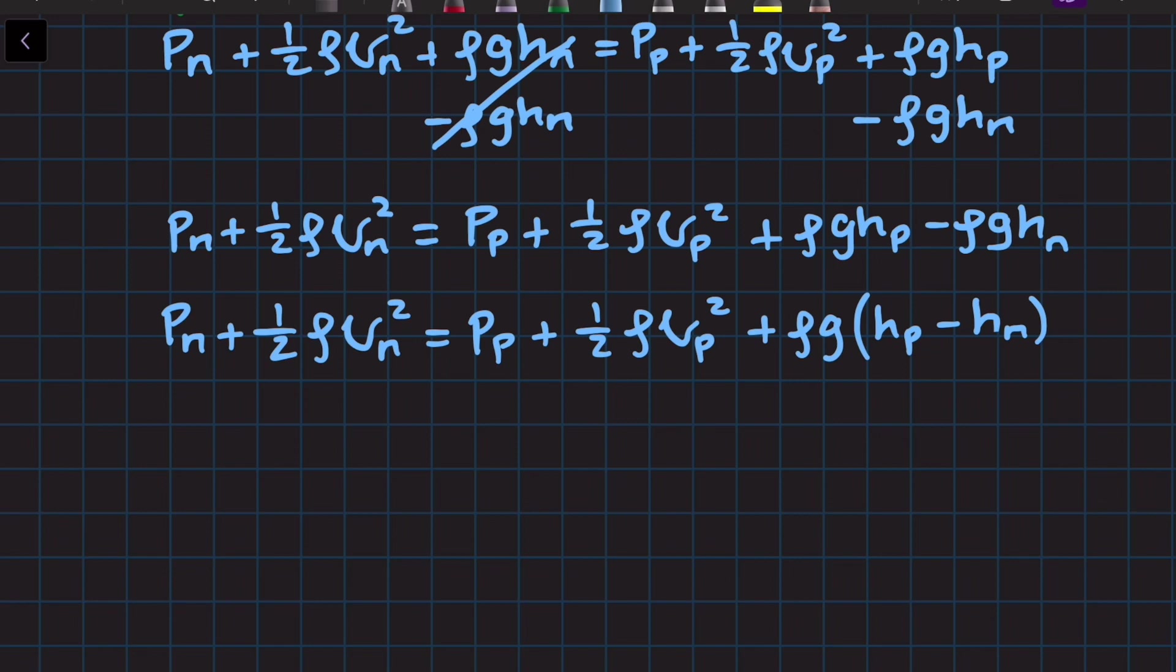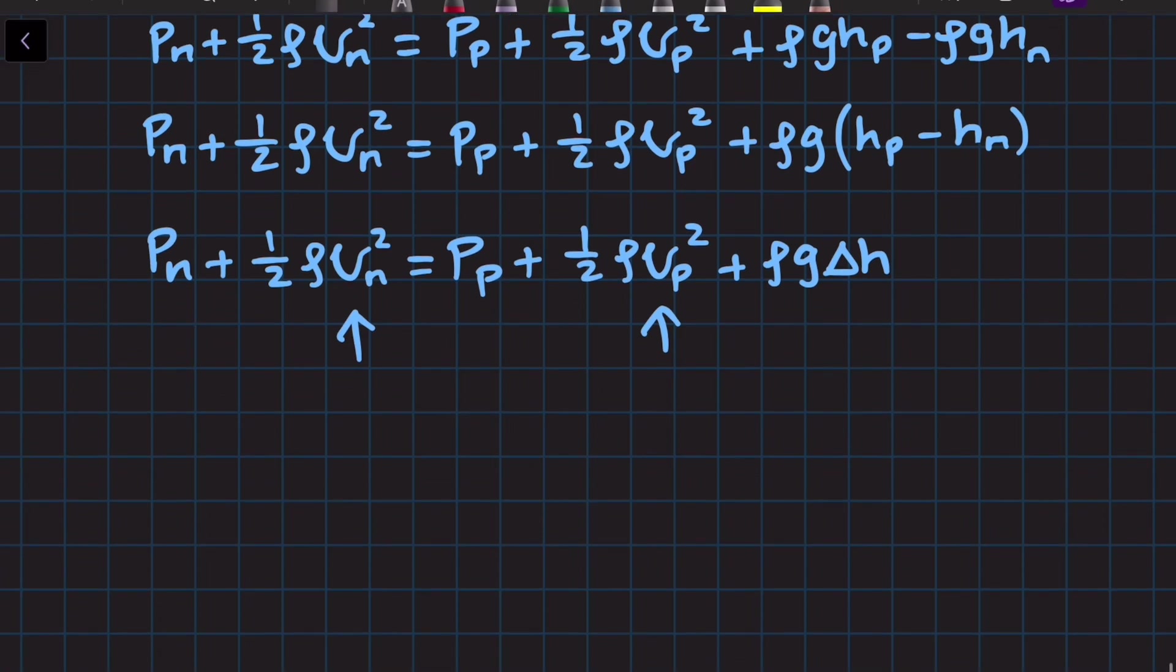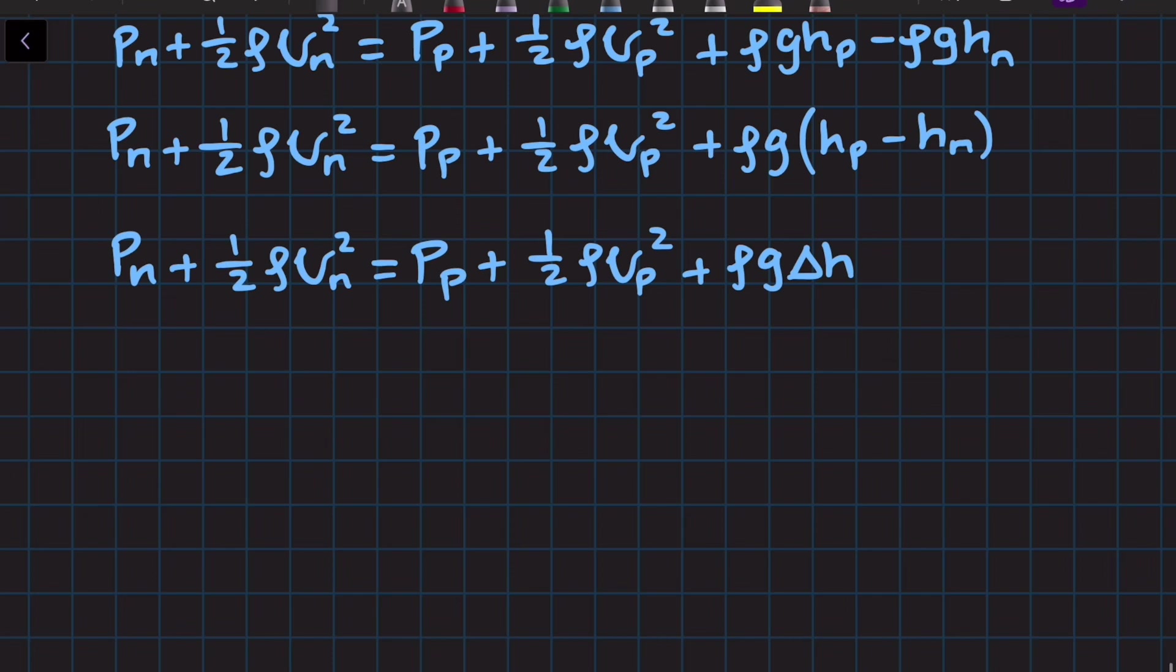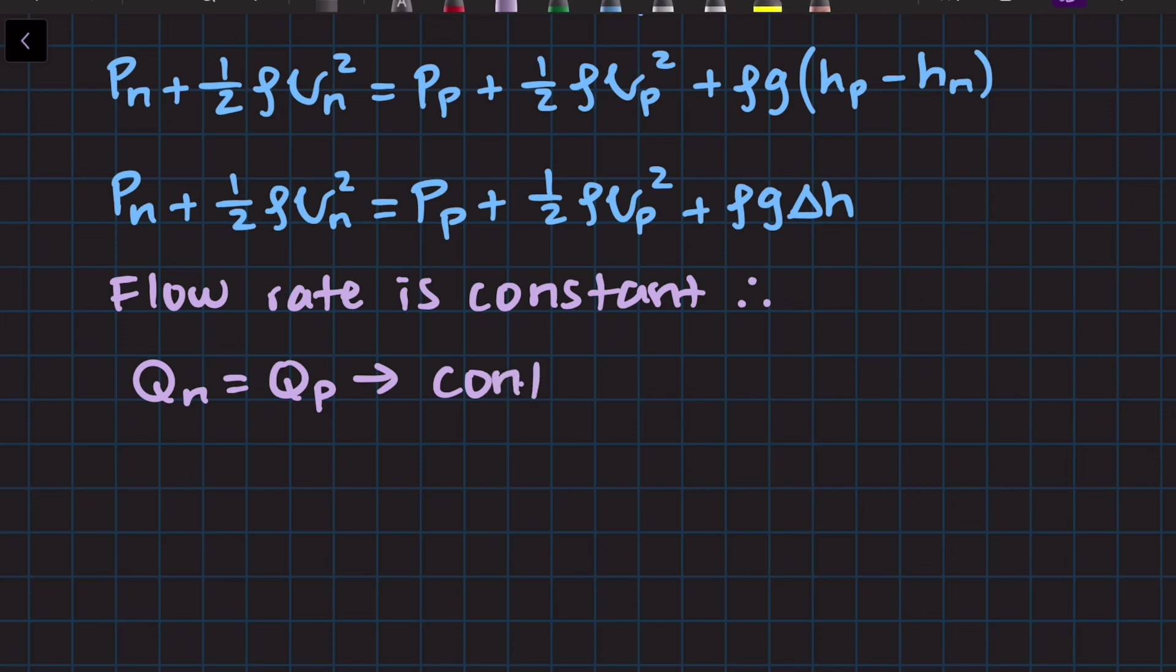Let's keep working to solve for velocity nozzle. The problem now is that we have two different velocities. We have the velocity at the nozzle and the velocity at the pump. Ideally we should only have one of them so that we can do algebra and solve for velocity at the nozzle. To do that we're going to apply the concept of flow rate. We know that flow rate is constant. Therefore the flow rate at the nozzle should equal the flow rate at the pump. So we can now apply the equation for continuity.